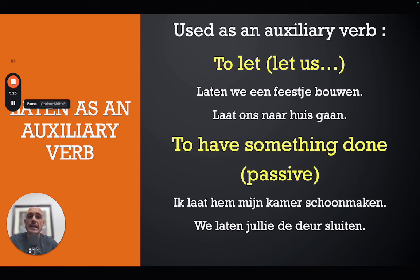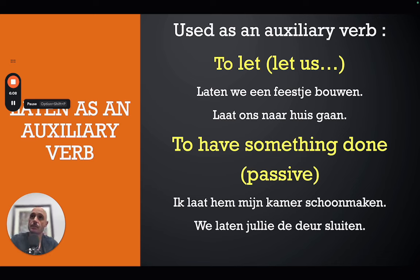Now we look at 'laten' used as an auxiliary verb — a 'hulpwerkwoord' in Dutch. To refresh your memory, an auxiliary verb appears at the beginning of the sentence and gives meaning to the main verb, which usually sits at the end. Other auxiliary verbs include 'willen,' 'zullen,' 'hebben,' 'zijn,' 'hoeven,' 'moeten,' and so on. The first auxiliary meaning of 'laten' is 'to let' — like 'let us.' For example, 'laten we een feestje bouwen' means 'let's have a party,' and 'laat ons naar huis gaan' means 'let us go home.'